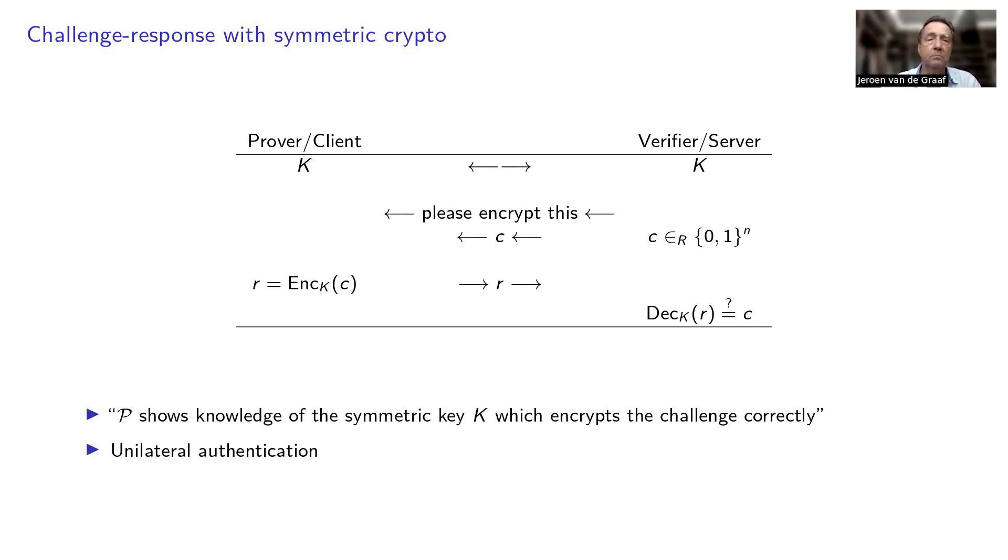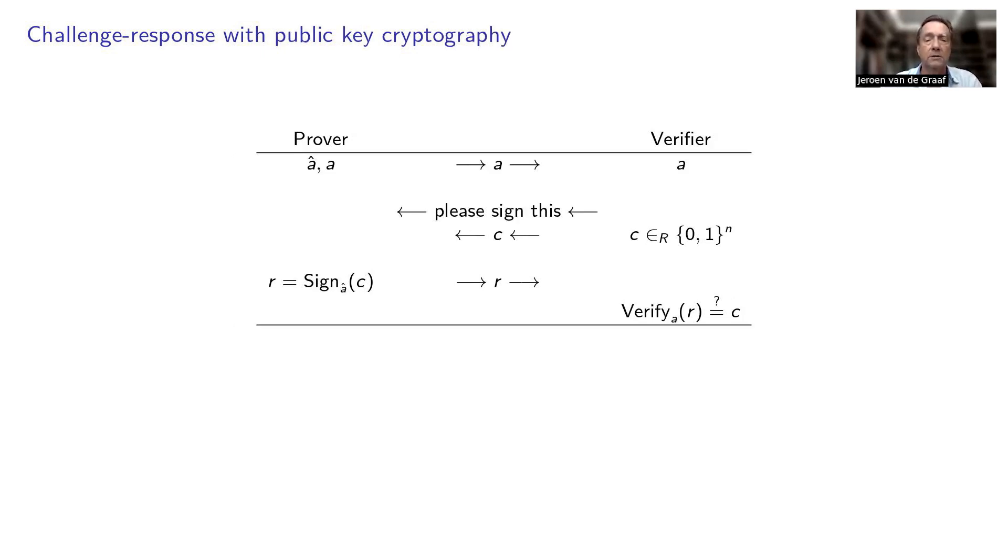You can, instead of using symmetric cryptography, also use public key cryptography. So here I use this a-hat as a way to denote a private key, and a is simply the public key. You can talk about encryption or you can talk about digital signatures. So the verifier sends a challenge and the implicit